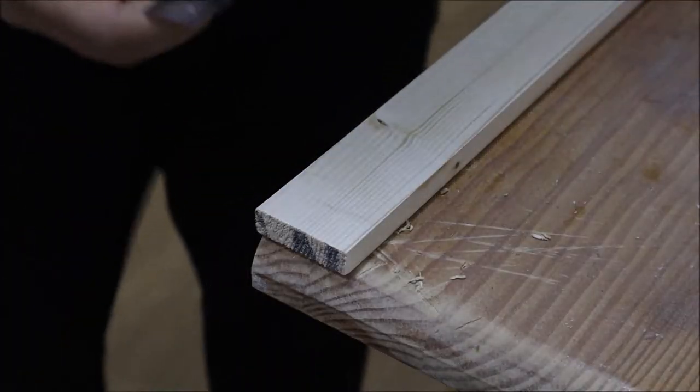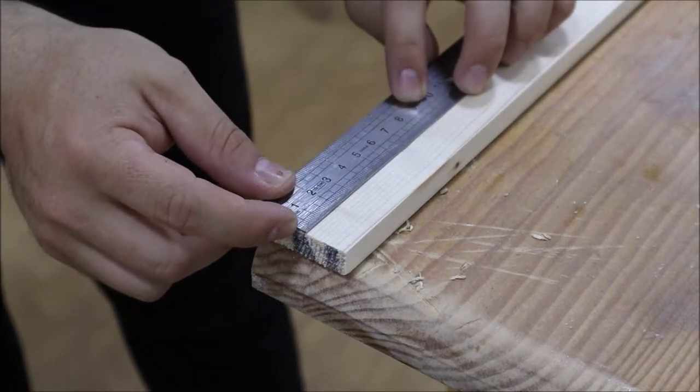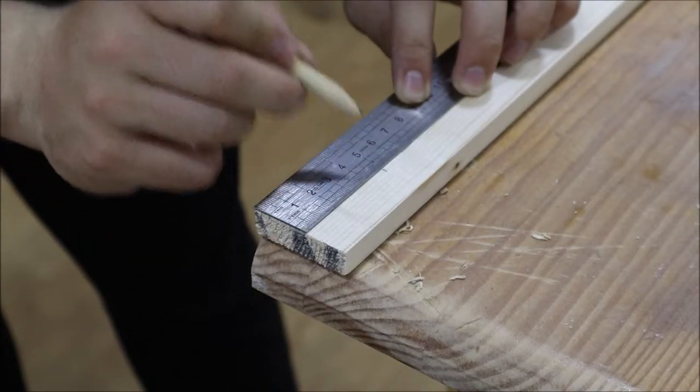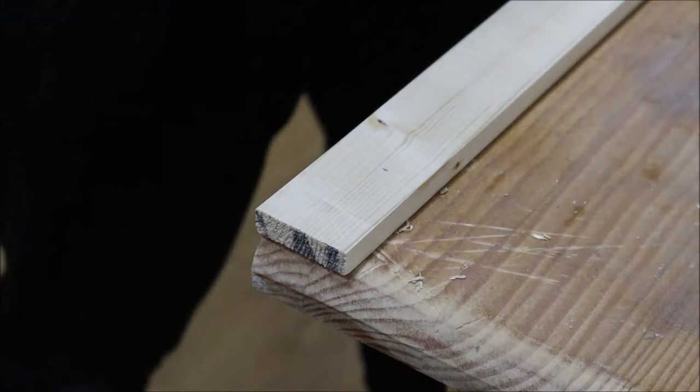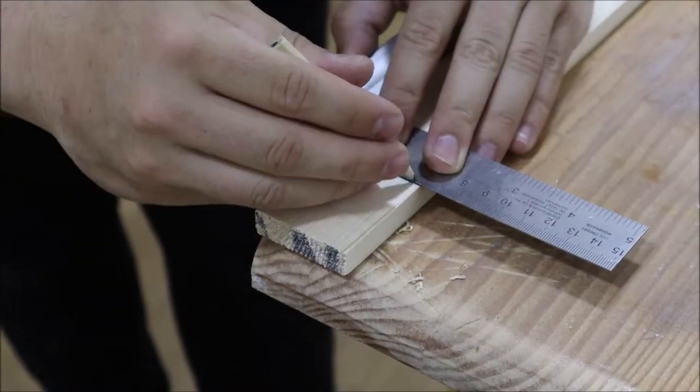So I measured my tripod plate and it's about five centimeters wide. I'm going to make mine 49 millimeters. So it's one millimeter shy of the tripod plate width.